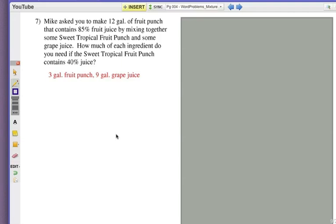Alright, number seven. Mike asked you to make 12 gallons of fruit punch that contains 85% fruit juice. That's obviously our mixture amount when we're done. But we're going to get that by mixing together some sweet tropical fruit punch and some grape juice. How much of each ingredient do you need if the sweet tropical fruit punch contains 40% juice?